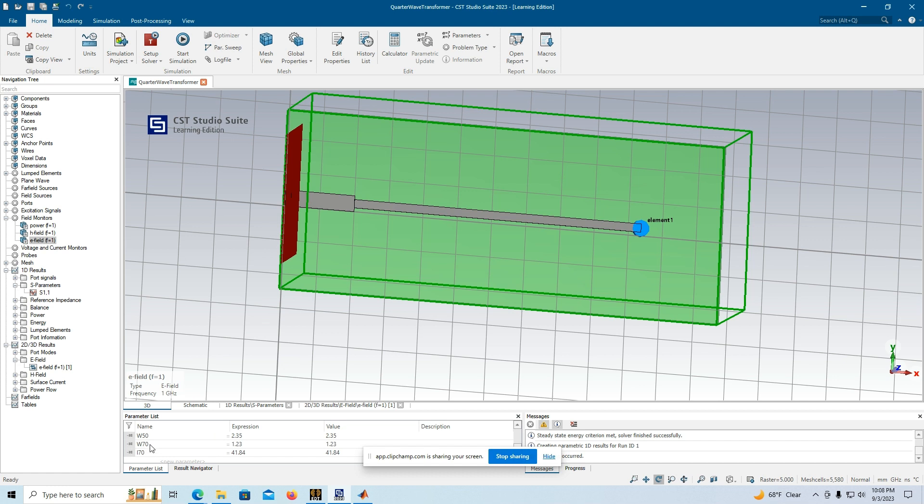The quarter wave, which is 70 ohms, again the square root of 50 times 100 is 70.7 ohms, and that width is 1.23 millimeters. You also have the port here in red, the input port.